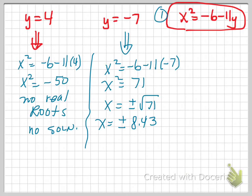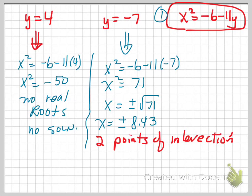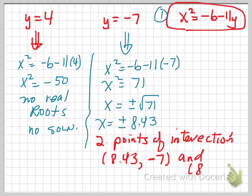So our conclusion is that there are two points of intersection. Those two points of intersection between this parabola and this circle occur at (8.43, negative 7) and (negative 8.43, negative 7). You can certainly confirm that by plotting the two equations on graph paper.